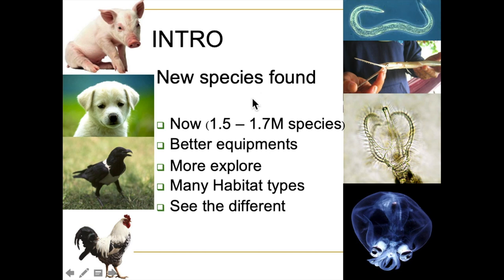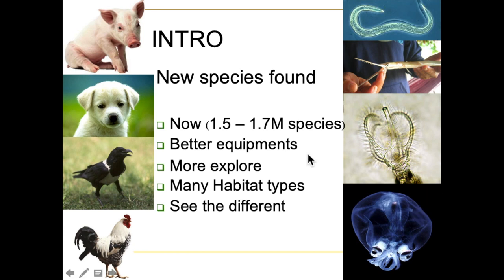We approximate there are around 1.5 to 1.7 million known species of animals, but I think there are more. With better equipment like drone technology and deep-sea submarines, we find many new species. Better equipment expands our ability to explore and increases the chance to find new species of animals.